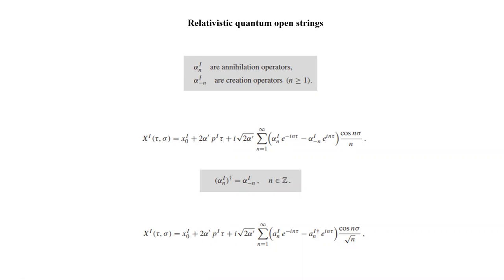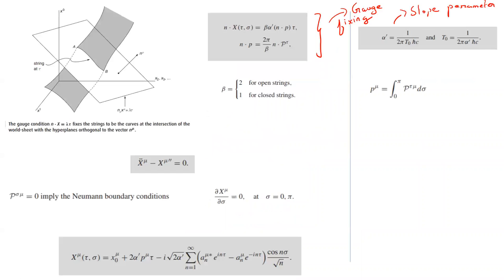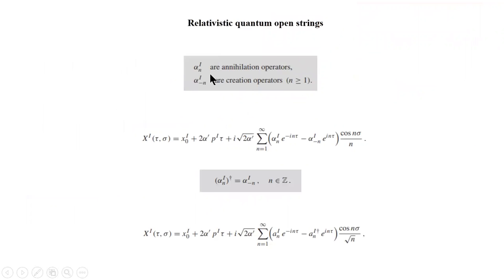So far in our lectures we have seen about the relativistic string and the solution for the relativistic string. So now we are going to quantize the string. This was the solution we had seen, and these are plane wave solutions, so it brings the harmonic oscillator into picture. If you want to quantize the theory, you just convert the harmonic oscillator into a quantum harmonic oscillator. Therefore, these coefficients will just become our creation and annihilation operators of the quantum harmonic oscillator.